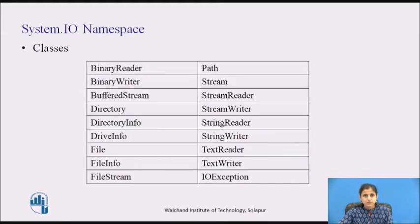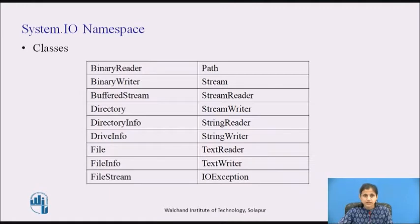File and stream IO refers to the transfer of data either to or from a storage medium. The .NET framework has a System.IO namespace which has various classes, structures, enumerations and delegates that are used to perform read or write operations to files and data streams, and types that provide basic file and directory support.